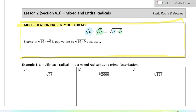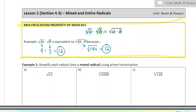It actually works for dividing too, but we're just going to look at multiplying today. As a quick example: if I do the square root of 16 times the square root of 9 separately, the square root of 16 is 4 and the square root of 9 is 3, so the answer is 12. And if I did the square root of 16 times 9 all under one square root, I'd get the square root of 144, which is also 12 — the same answer. So that works for any number. You can combine them together, and we're going to use that property today when we convert between mixed radicals and entire radicals.